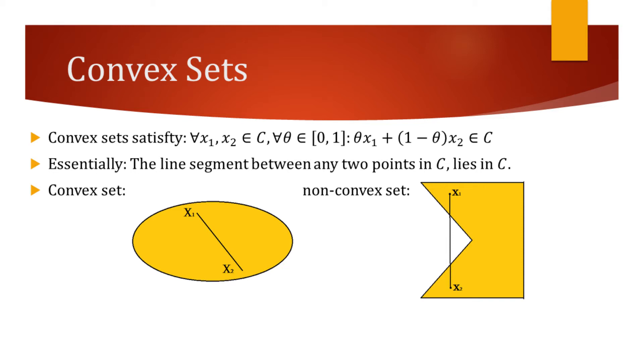For the counterexample, consider the figure on the right. As we can see, there exists a pair of points in this set for which the line segment between them does not lie in the set.